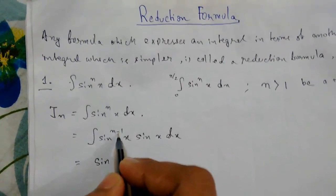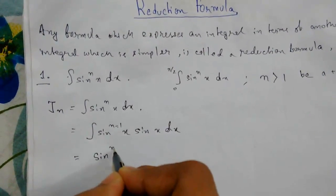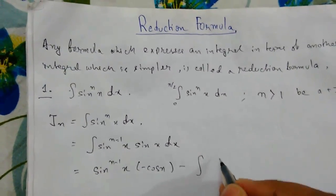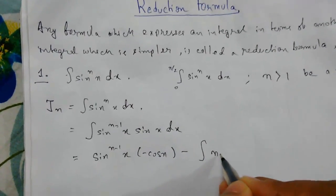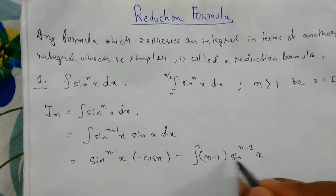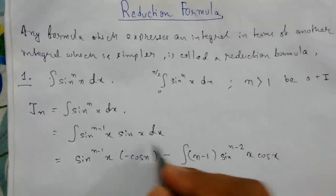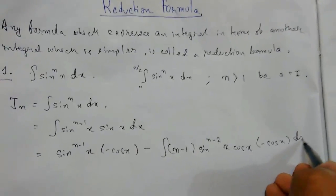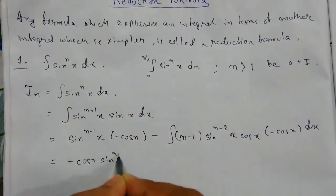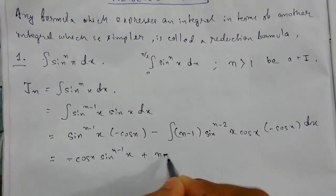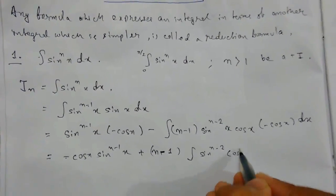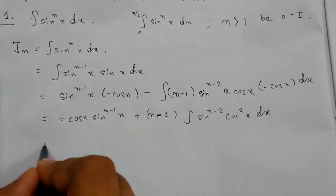Taking sin^(n-1)(x) as the first function and sin(x) as the second function: sin^(n-1)(x) remains, and the integral of sin(x) is -cos(x). For the derivative part, the derivative of sin^(n-1)(x) is (n-1)sin^(n-2)(x)cos(x), and the integral of sin(x) is -cos(x). Then we integrate sin^(n-2)(x) cos²(x) dx.